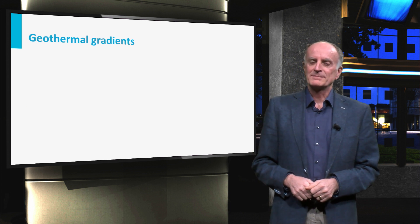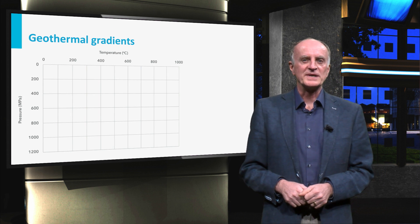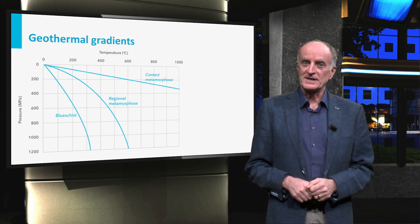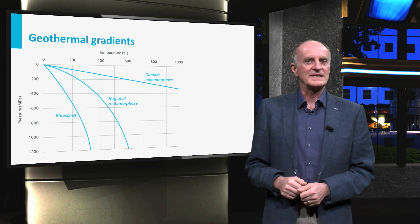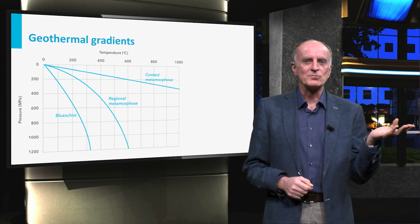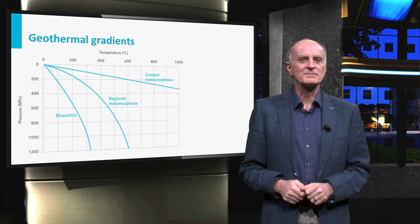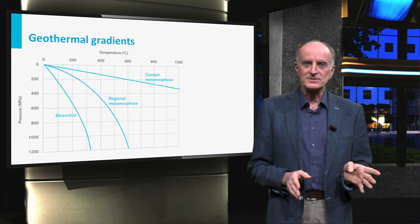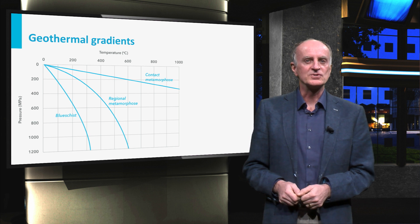Changes of temperature with depth are described by geothermal gradients. We define a gradient characterized by high temperatures and low pressure — contact metamorphism. We define a regional one with intermediate values, called regional metamorphism, and one with very low temperatures even at high depths, named blue schists.